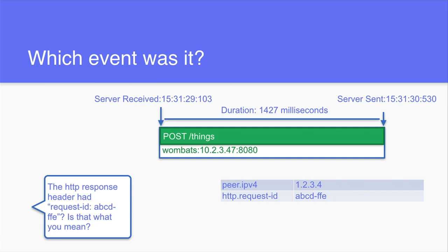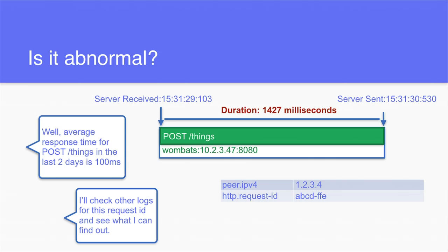Long is relative. Definitely in tracing it's relative. Somebody might say 10 milliseconds is long; somebody might say it's very short. Is it abnormal? Usually we're comparing against historical information or some preconceived knowledge. Usually if I'm on call, I'm only really paying attention if I got an alarm. Someone set up that alarm and might have said the threshold is one second for this response time — and that's why you ended up in the logs in the first place.